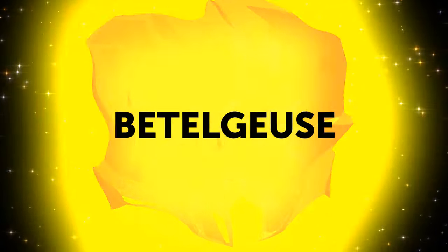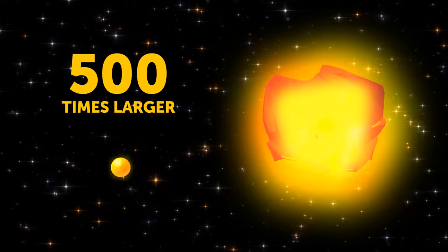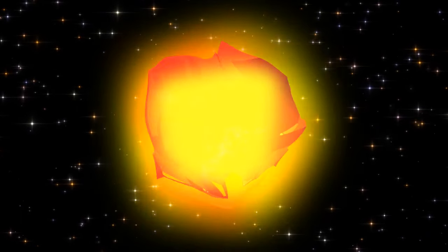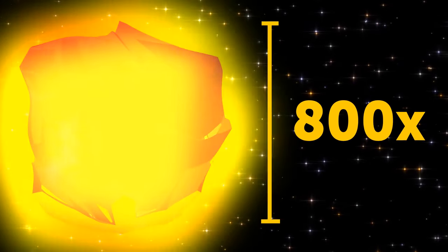Betelgeuse, a red supergiant. This ball of boiling plasma is one of the largest stars in our galaxy, and one of the brightest. It's about 500 times larger than the sun. But Betelgeuse is pulsating, getting bigger and smaller. At its peak, it becomes 800 times its average size.